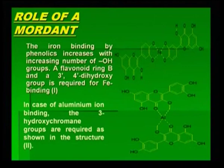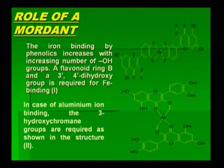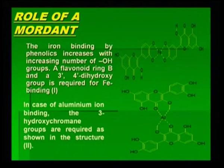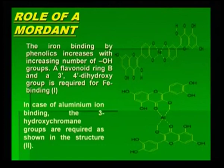What is the role of the mordant? Iron binding by phenolic groups increases with the increasing number of OH groups. A flavonoid ring B and the 3-prime, 4-prime dihydroxy group is required for iron binding, as seen in the first structure — you can see how nicely the two flavonoid structures are linked up with the iron. In the case of aluminum, the binding occurs with the 3-hydroxychromane group, where the requirement of hydroxy plus carbonyl is a must as shown in structure number 2. This shows where the metal comes in and its role, and if this metal has to be replaced, what new linkages with enzymes, PEG or tannic acid will be facilitated.